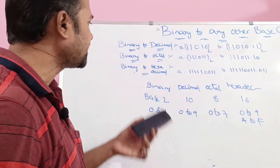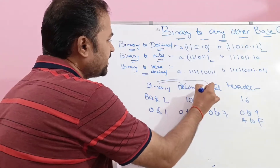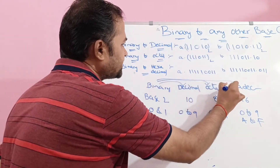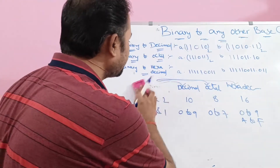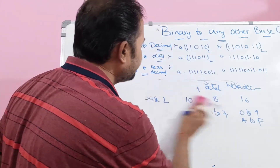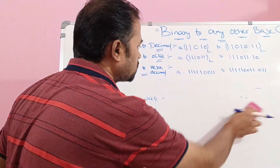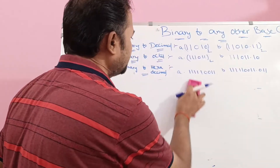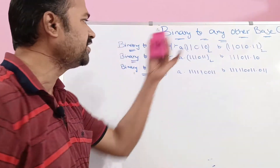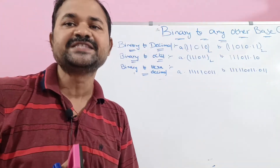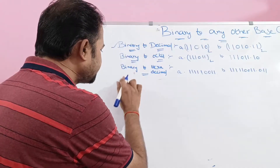Our target is to convert binary to decimal, binary to octal, and binary to hexadecimal. First, let us see binary to decimal conversion. Two binary numbers are given — one is a normal integer and the second is a fractional or floating point number. We have to convert both into decimal numbers.